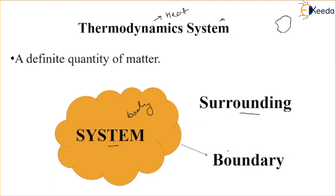The thing which differentiates the system and surrounding is called the boundary. So in simple words, system and surrounding are both separated by the boundary. This boundary can be fixed or it can be of a moving type. And combining system, surrounding, and the boundary which separates them — all together makes the universe. So this is the basic definition of system, surrounding, and boundary.